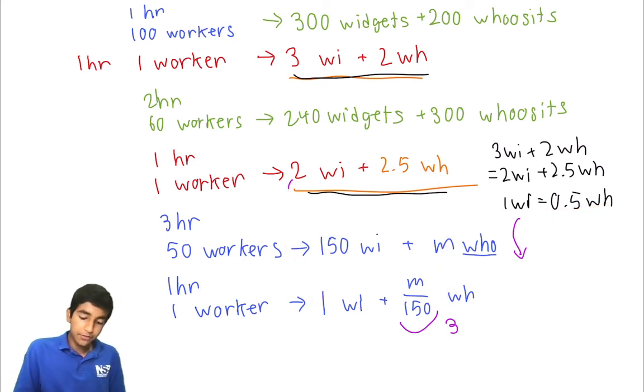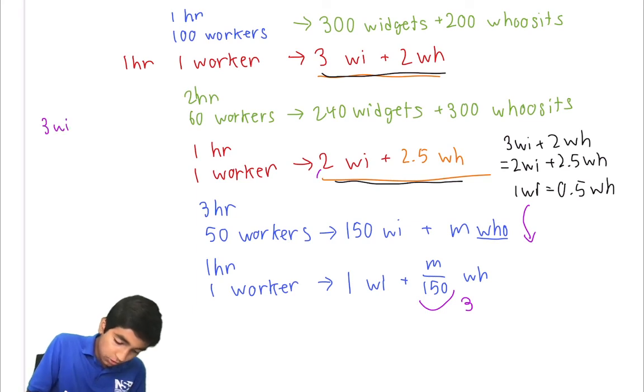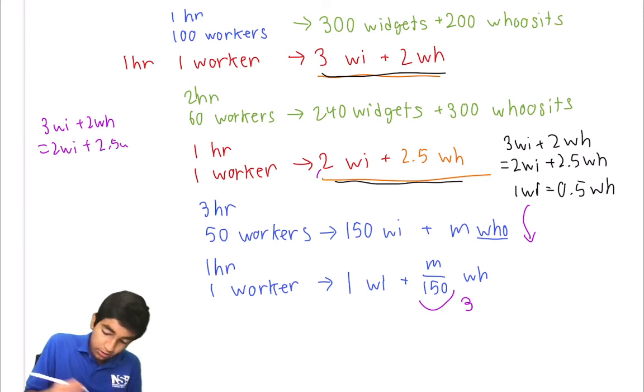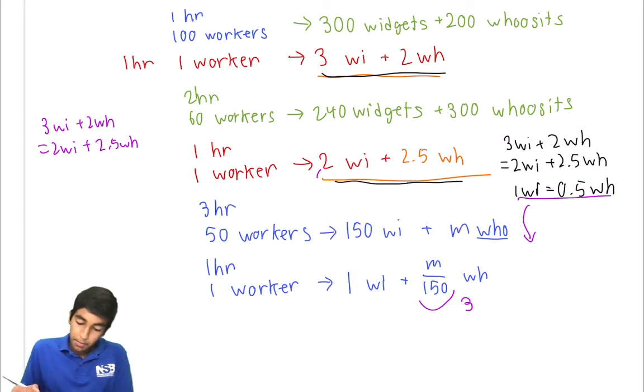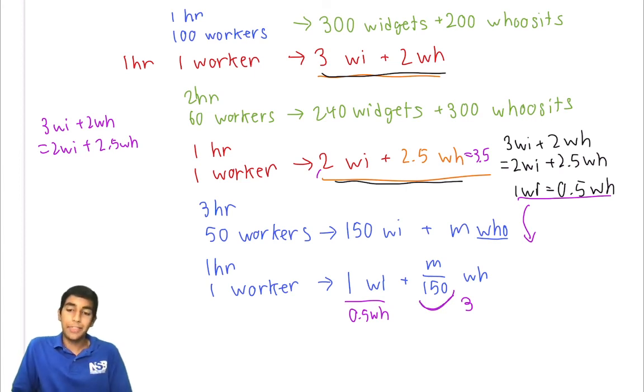Another way of thinking about this, if this is confusing, is to say 3 widgets plus 2 whoosits equals 2 widgets plus 2.5 whoosits. Once you get from here, we can substitute them back in to get that 1 widget is half a whoosit, so 2 widgets is 1 whoosit. So you can always produce 3.5 whoosits equivalent worth of stuff. So if you can produce 3.5 whoosits equivalent, then when we produce 1 widget, it's equivalent of half a whoosit. So therefore, we can produce 3 remaining whoosits. And therefore, we get n over 150 is 3, so n is 450.